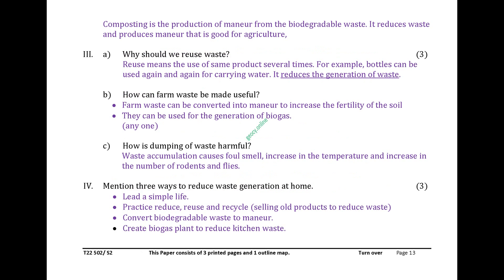Why should we reuse waste? Reuse means using the same product several times; for example, bottles can be used again and again for carrying water, reducing waste generation. How can farm waste be made useful? Farm waste can be converted into manure to increase soil fertility, or used for generation of biogas. How is dumping of waste harmful? It causes foul smell, increase in temperature, and increase in rodents and flies. Three ways to reduce waste at home: lead a simple life; practice reduce, reuse, and recycle by selling old products; convert biodegradable waste to manure; create a biogas plant to reduce kitchen waste.